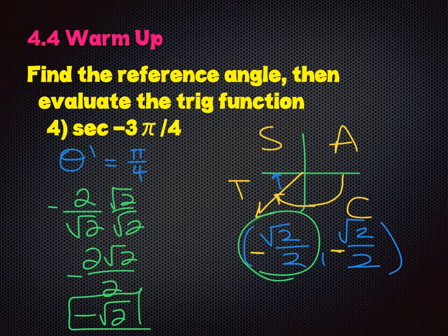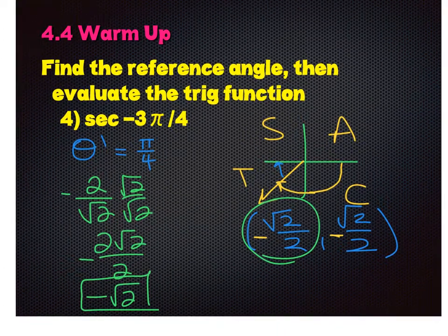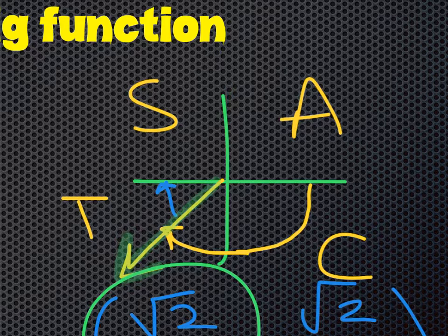The reference angle is the distance from that angle to the x-axis. If I'm here and it's a positive angle bigger than 1, I do angle minus π. But because this is a negative angle, it reverses — I do π minus the positive version of that angle. So π minus 3π/4 gives π/4. You're always finding the distance between that angle and the x-axis. If positive, subtract π from it; if negative, that's where the direction changes.